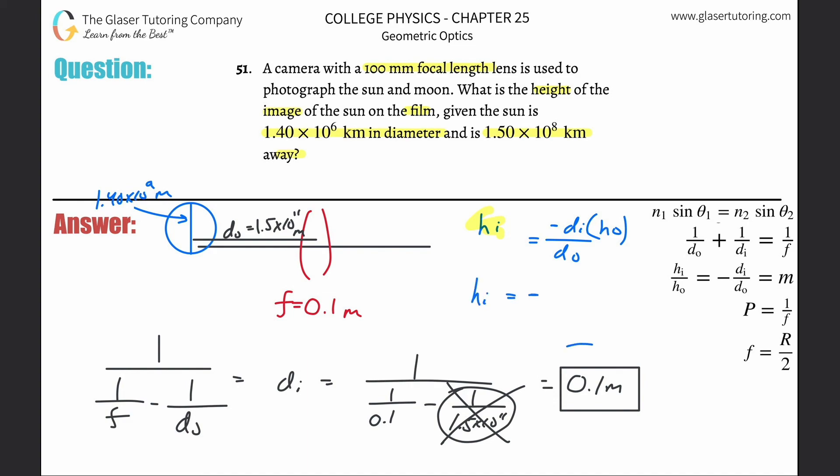The image height is now going to be equal to negative di. The image distance is what we found over here, 0.1. The height of the object, the actual object is the sun, what's the height? We already said it's the same thing as the diameter—if they gave the radius you'd have to multiply it by two. 1.4 times 10 to the 9th, divided then by the object distance away from the lens, which was 1.5 times 10 to the 11th.